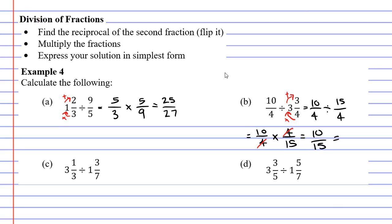We can also simplify this. I can divide both of these numbers by 5. 10 divide 5 is 2 and 15 divide 5 is 3. I get my simplified fraction of 2 thirds.